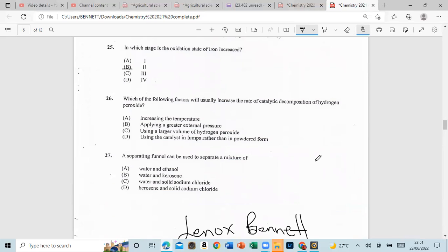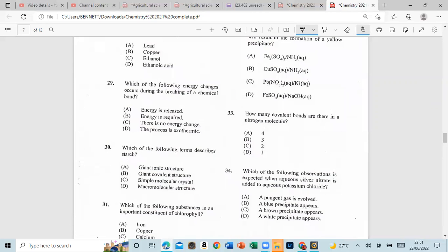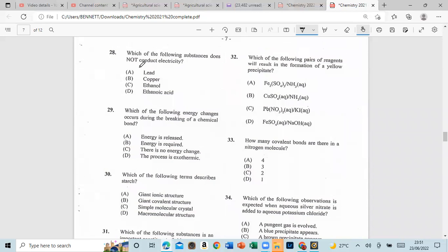Number 26, which of the following factors will usually increase the rate of catalytic decomposition of hydrogen peroxide? And that's A, increase in temperature. Number 27, when can we separate the mixture of water and kerosene? Number 28, which of the following substances does not conduct electricity? Lead, copper, ethanol, ethanoic acid? And that is ethanol, ethanoic acid. Number 29, each of the following energy changes occur during the breaking of a chemical bond, and that's P, energy is required. Number 30, which of the following terms describes starch? And that's P, macromolecular structure.